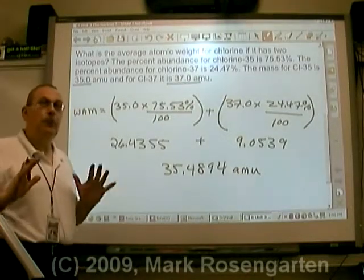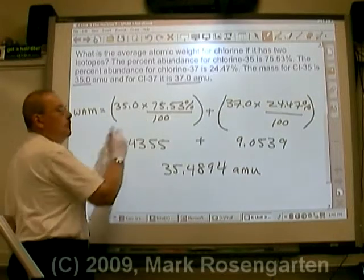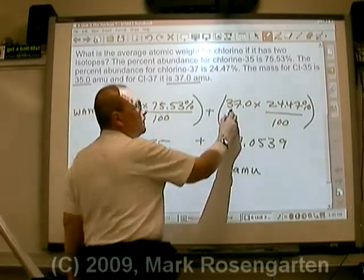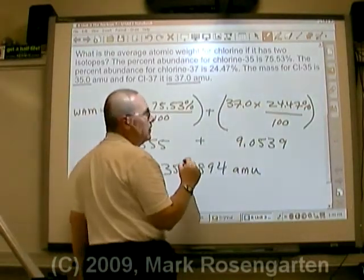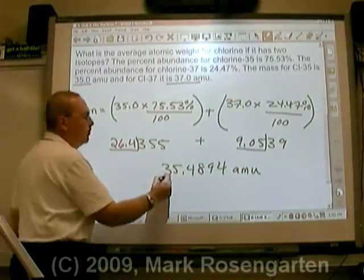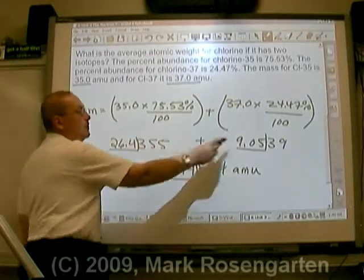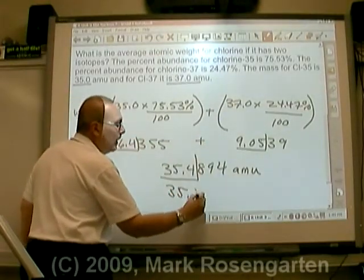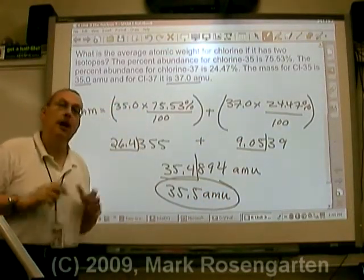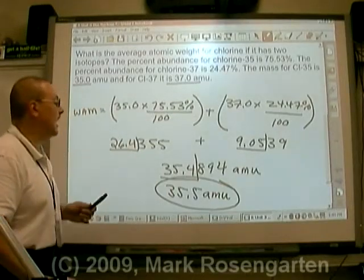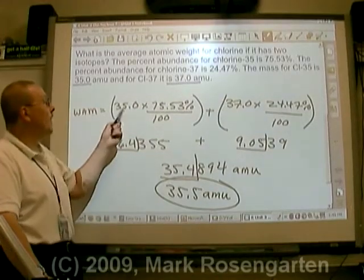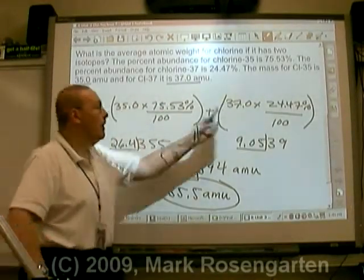Now, of course, we have to worry about significant figures. We have three significant figures and four significant figures, so we're going to go with three significant figures. So when we add these two values up, we're going to round to the tenths place, or 35.5 AMU. And that is the weighted average mass of chlorine. You'll notice that the average is much closer to 35 than it is to 37, because 35 makes up far more than 37 does.